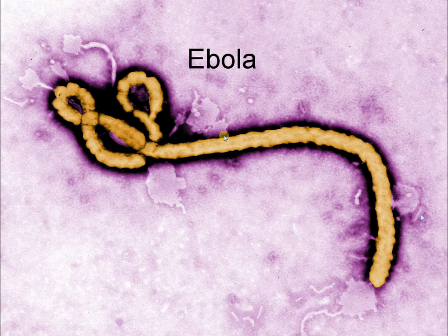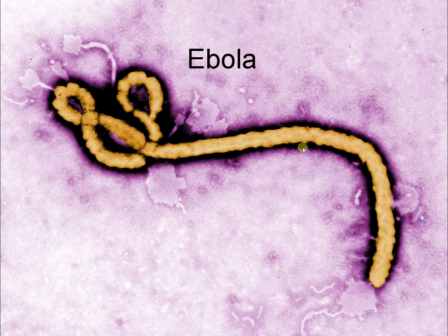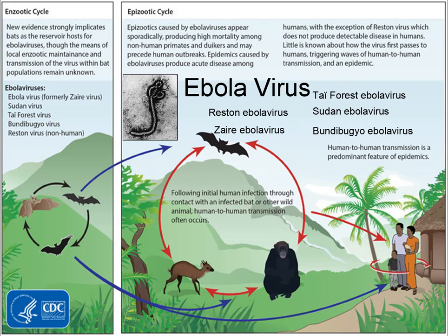Ebola is a very dangerous and widely well-known disease, especially for its 2014 outbreak. Ebola mainly originates from bats, where it stays within the population. Eventually it spreads to an animal or a human, and from that human it can get passed back to animals or bats and eventually to another person, causing very big problems.